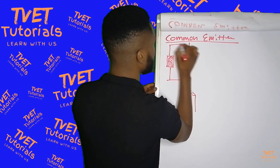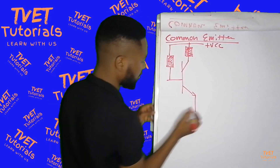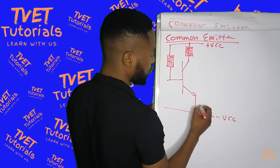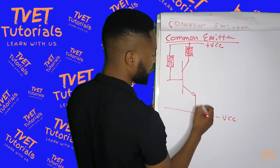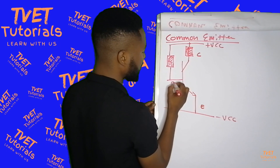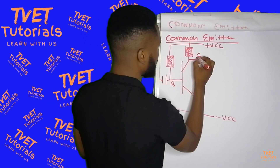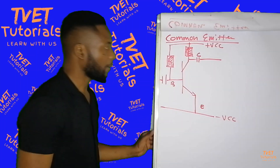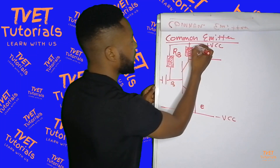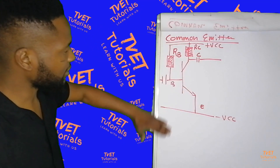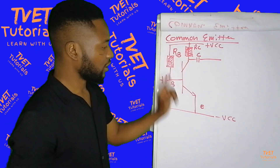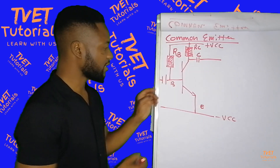You will add your resistance. This is your plus Vcc. So we're drawing the circuit — this is my plus Vcc. This is your emitter, this is your collector, and this is your base. The input has bypass capacitors. We know that the transistor consists of three terminals: the collector side, the emitter side, and the base side.